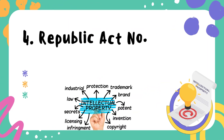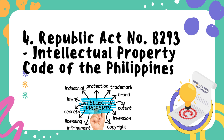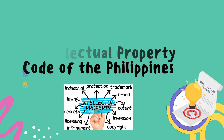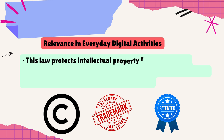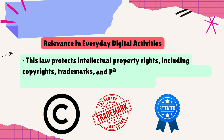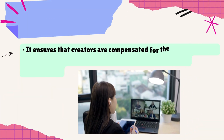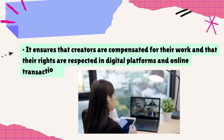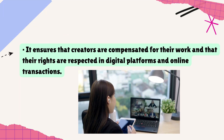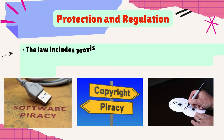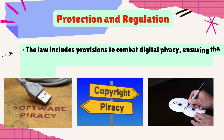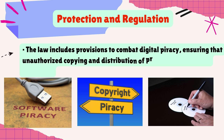Republic Act No. 8293 — Intellectual Property Code of the Philippines. Relevance in Everyday Digital Activities: This law protects intellectual property rights, including copyrights, trademarks, and patents, in digital content such as software, music, videos, and written works. It ensures that creators are compensated for their work and that their rights are respected on digital platforms and in online transactions. The law also includes provisions to combat digital piracy, ensuring that unauthorized copying and distribution of protected content are penalized.